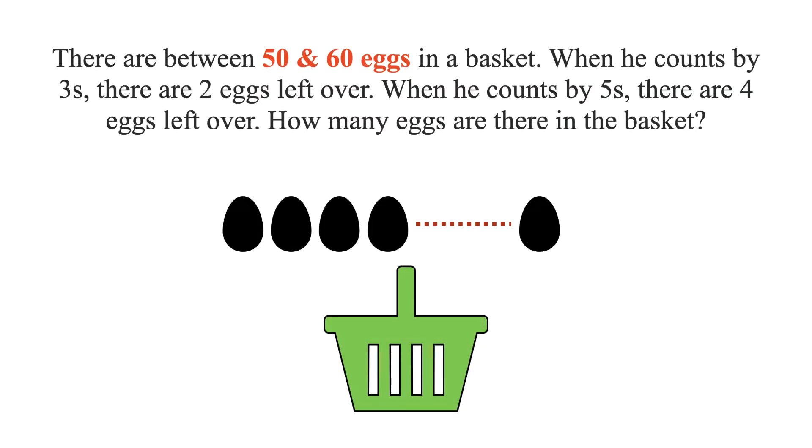Welcome to Simply Logical, this is Vingtish. There are between 50 and 60 eggs in a basket. When he counts by 3s, there are 2 eggs left over. When he counts by 5s, there are 4 eggs left over. How many eggs are there in the basket?